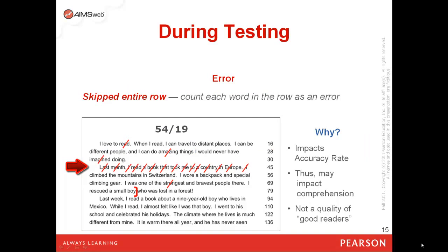Whenever a student skips an entire row, count each word in the row as an error. If you're using our online scoring, it will do this for you. You can even check the box to indicate that line was skipped, and every word in that line will be marked wrong automatically. The reason we count every word as an error is because this will impact accuracy rate for a student. Accuracy is highly tied to comprehension. Oral reading has a high correlation with comprehension, and accuracy rate is part of that. We report accuracy rate in AIMSweb, and you'll want to look for accuracy scores of 95% or better when you look at your AIMSweb reports.